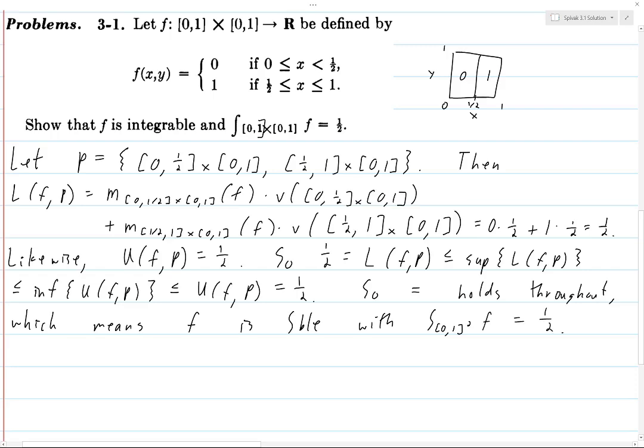Because we know a function is integrable if the supremum of the lower sums is precisely equal to the infimum of the upper sums. And in that case, the integral is precisely whatever that value is that those two things equal.